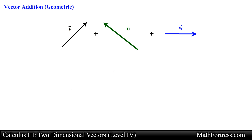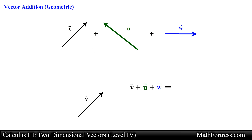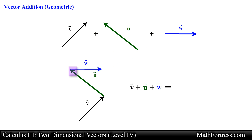For example, if we had a third vector W and wanted to find the sum of vector V, U, and W, we would first start with vector V and move vector U so that its tail coincides with the tip of vector V. Then we move vector W so that its tail coincides with the tip of vector U. The resultant vector will be the vector that starts from the initial point of vector V and terminates at the tip of vector W. The order in which the vectors are added does not matter — you should obtain the same resultant vector.